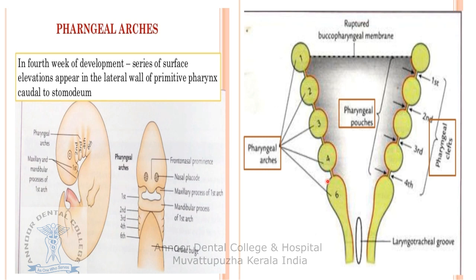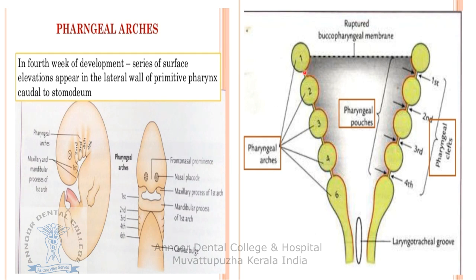In the interval between two adjoining arches, the endoderm extends outwards to form a pouch. The wall of the pharyngeal arch consists of three layers: inner endoderm, middle mesoderm, and outer ectoderm. The endoderm extends outward to form a pharyngeal pouch, while the ectoderm dips inward to form an ectodermal cleft.